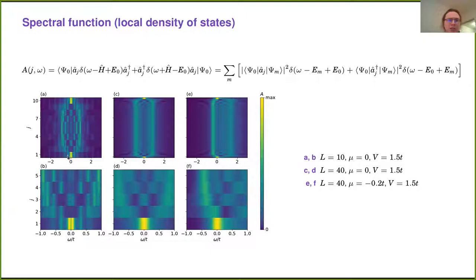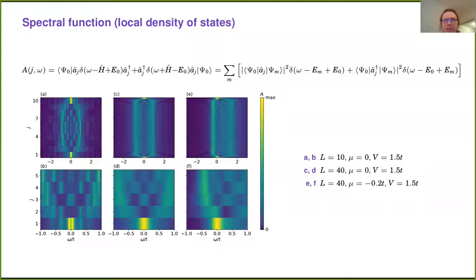One can see that there is a peak in the local density of states at the edges of the chain, close to zero energy. For a short chain of 10 sites, we can see the splitting of the peak. For longer chains, we cannot see it because the energy resolution doesn't allow it. These pictures were obtained by exact diagonalization of the Hamiltonian for the short chain of 10 sites, and using tensor networks for longer chains of 40 sites.